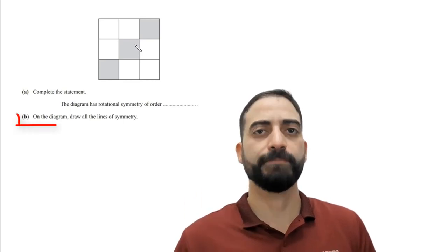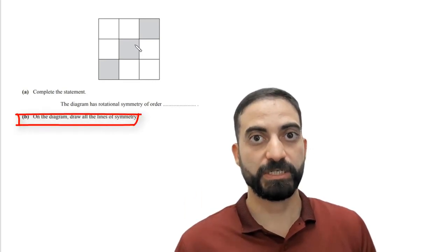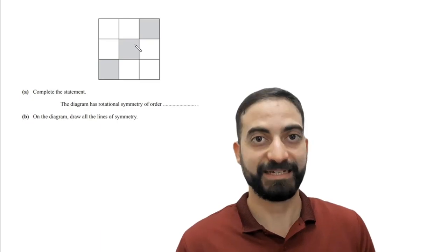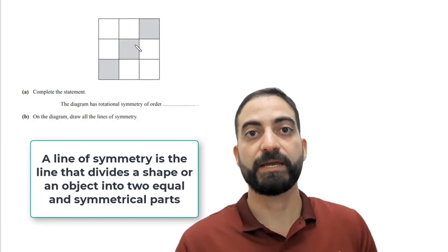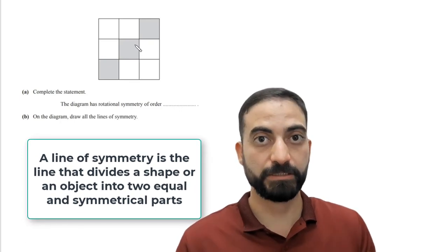Now we turn to part B. We are asked to draw all the lines of symmetry. First, what is the line of symmetry? A line of symmetry is the line that divides a shape or an object into two equal and symmetrical parts.